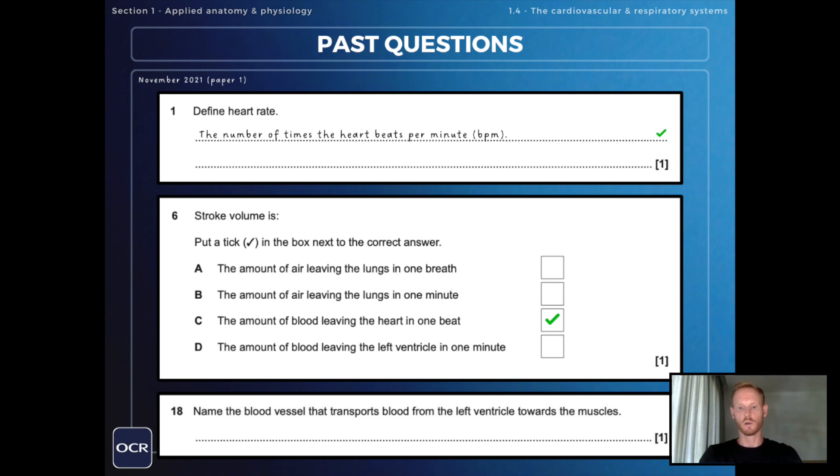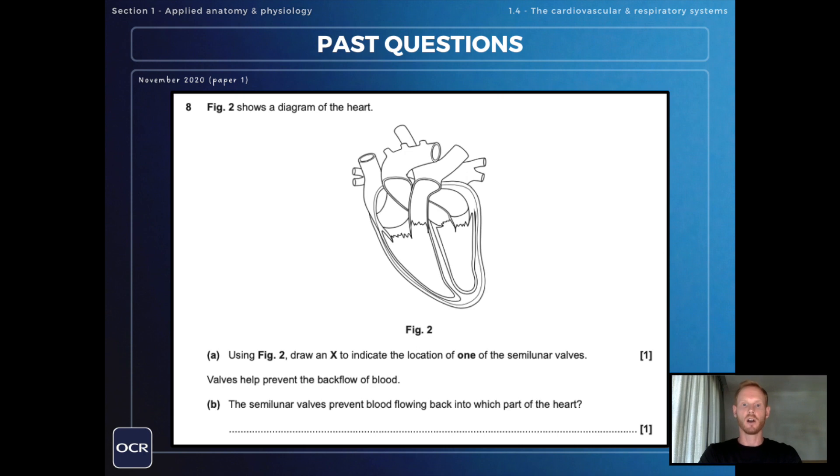Next, name the blood vessel that transports blood from the left ventricle towards the muscles, and that one is the biggest artery in the body, the aorta. Figure 2 shows a diagram of the heart. Using figure 2, draw an X to indicate the location of one of the semilunar valves.